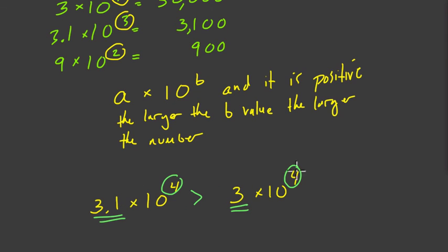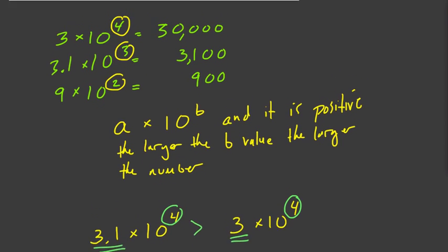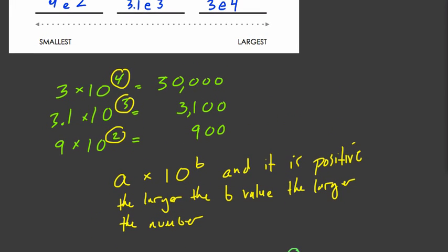Now, with negative numbers, the opposite is true. And we'll get into that in other problems. So basically, if with positive numbers, the larger the exponent, the larger the number, the opposite is true. With negative numbers, the larger the exponent, the smaller the number. And we'll talk a little bit about that in the upcoming problems. Thanks.